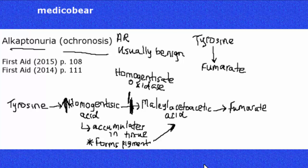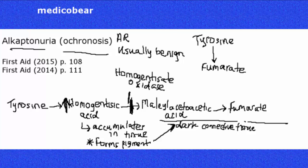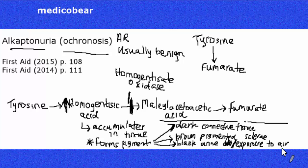For example, the connective tissue will turn a darkish color — dark connective tissue. The sclera, which is the white outer layer of the eyeball, turns a brownish color — brown pigmented sclera. And the urine turns black on prolonged exposure to air. This definitely comes up in clinical vignettes.